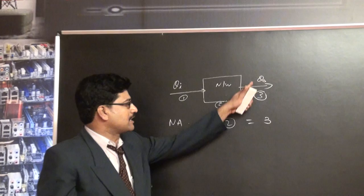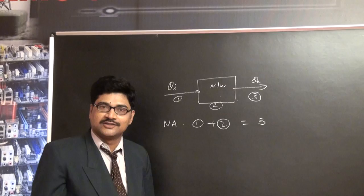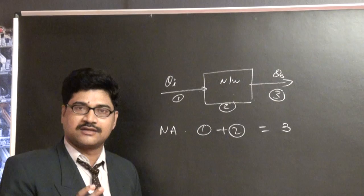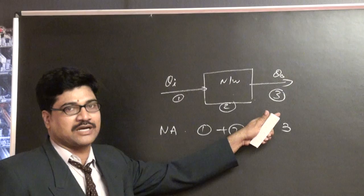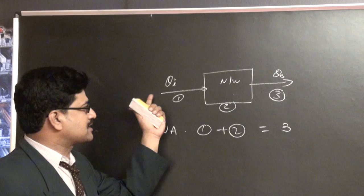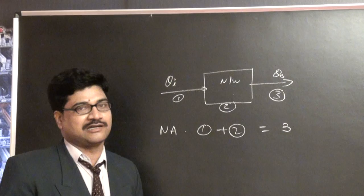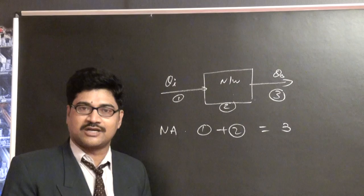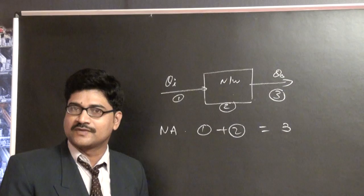The responses generally observed in network analysis are voltage, current, power, and energy. The excitations are voltage excitation and current excitation — that is, voltage sources and current sources. The network consists of elements: resistor, inductor, and capacitor, depending on the nature of the network.